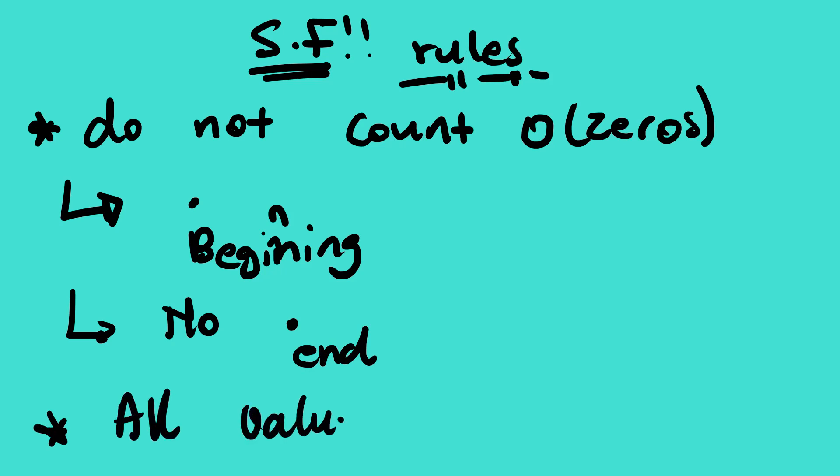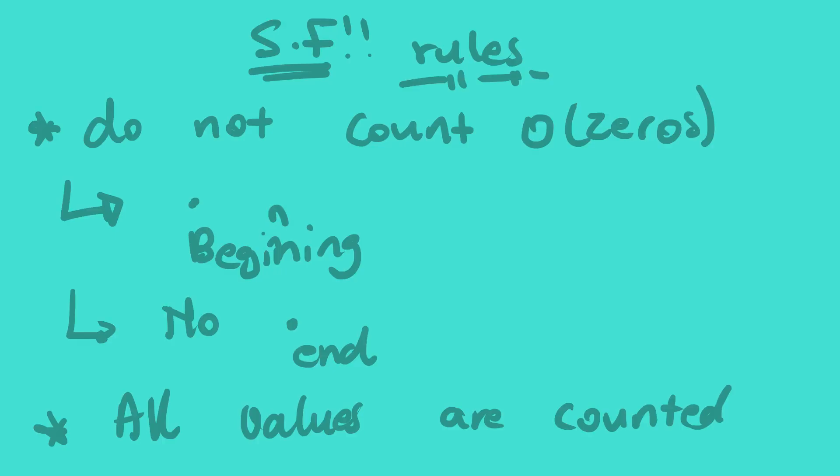Let us jump straight to our examples. The number 12 — we have two significant figures here. Another example: 1003. In this case we have zeros, but the zeros are not at the beginning or the end — they are in between other non-zero numbers. So in this case we count those zeros.